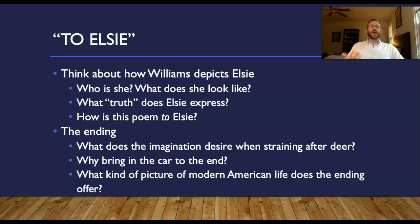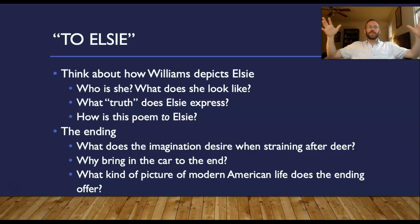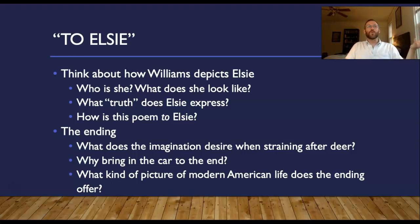For the ending: what is the imagination, desire, when it's "straining after a deer" — what does that symbolize? And then why bring in the car? In other poems Williams celebrates the car as a new depiction of how we see, but here it seems like a vehicle of separation, of lostness — just driving down this highway with nothing to hold on to, no one to witness, "no one to drive the car." That's just really a gut punch. So what kind of picture of modern American life does the ending offer? If you have questions about "To Elsie," please let me know — it's a complex poem, do your best.